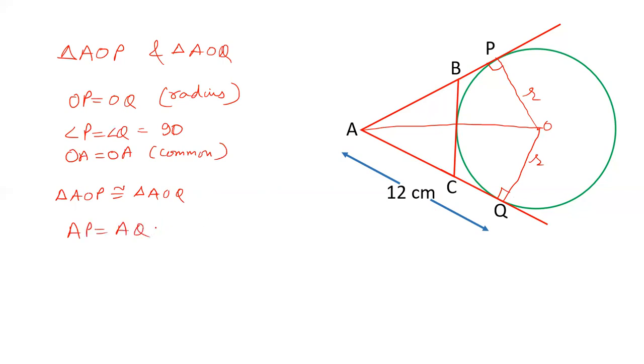AQ is already given as 12 centimeters, so both are 12 centimeters. We have to find out the perimeter. Now let's label this point as R. Let's say BC is tangent to the circle at point R.